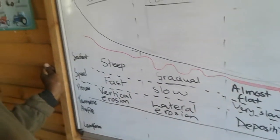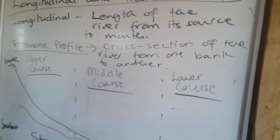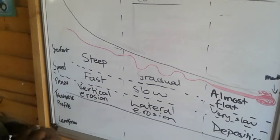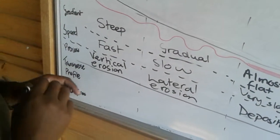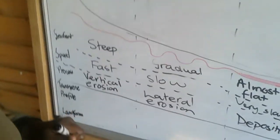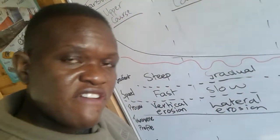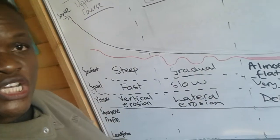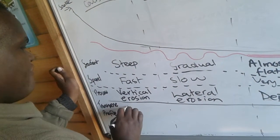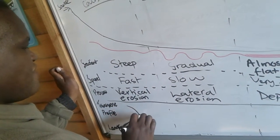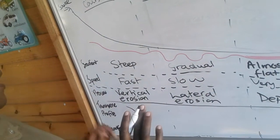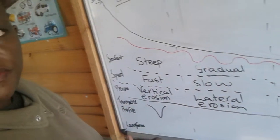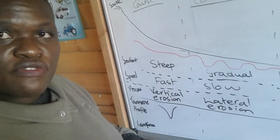More deposition will take place within the lower course of the river. Now, the transverse profile is a cross-section of a river from one bank to another. In the upper course, with its steep gradient and fast-flowing river experiencing vertical or downward erosion, when we draw a cross-section we are going to get V-shaped valleys.